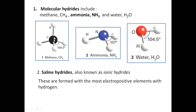The black ball is carbon and the white balls are hydrogen — CH4. There is one carbon and four hydrogens, giving you CH4. Then this is ammonia: nitrogen with three hydrogens attached, NH3. And here you see water, H2O — two H atoms and one oxygen. So these are the examples of molecular hydrides.